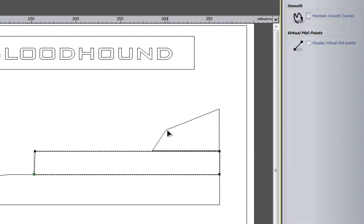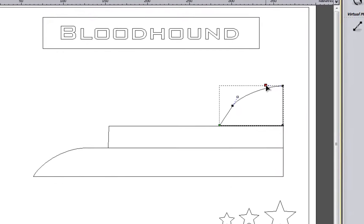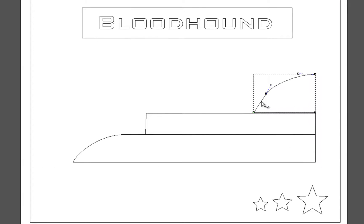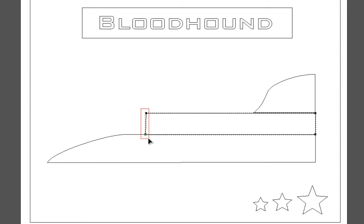Now if we remember, we can use that B key on the keyboard and we can create what we call Bézier curves, to create a nice smooth curve. We can move the points out slightly more if we need to, or drag more than one point across.